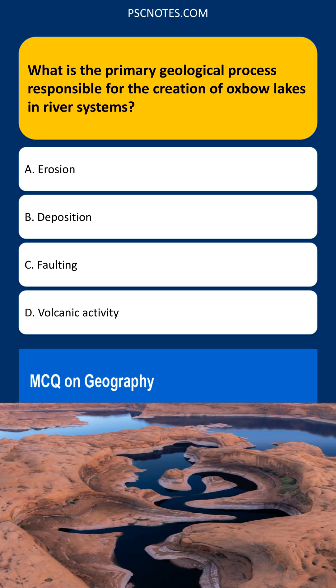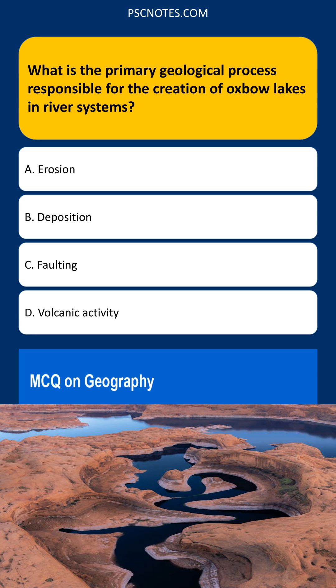What is the primary geological process responsible for the creation of oxbow lakes in river systems? Erosion, Deposition, Faulting, Volcanic Activity.